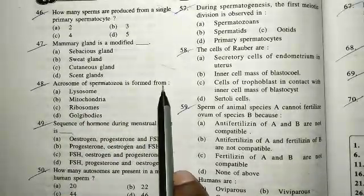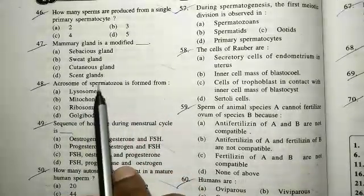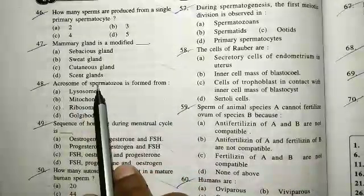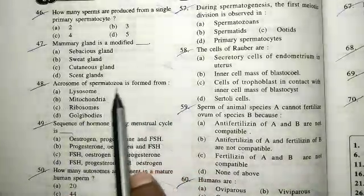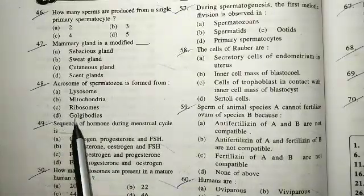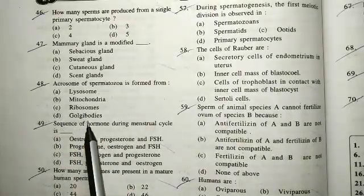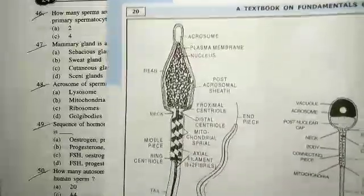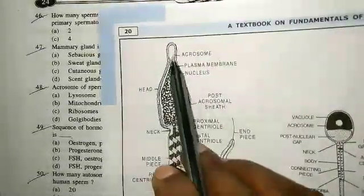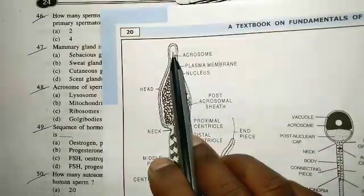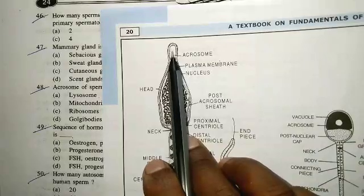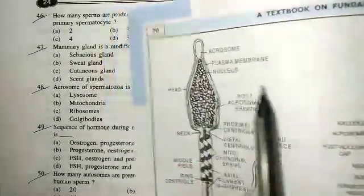Question 48: the acrosome of sperm is formed from this. The correct answer is option D — Golgi body. Looking at the sperm diagram, the acrosome is located at the head of the sperm and is formed from the Golgi body.